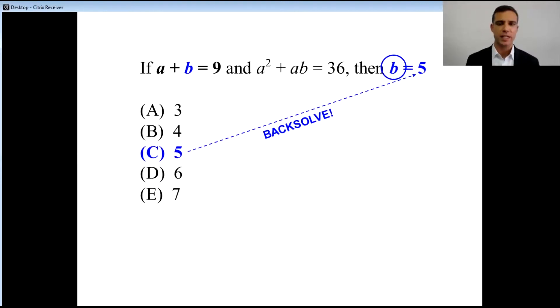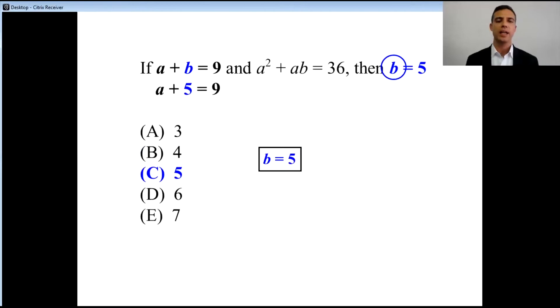So we start in the middle and test out C. Well, if b equals 5, what does that mean a has to equal? We go back. a plus 5 equals 9. Since we knew what b was because we tested it out as C, it very easily tells us that a is going to have to equal 4.